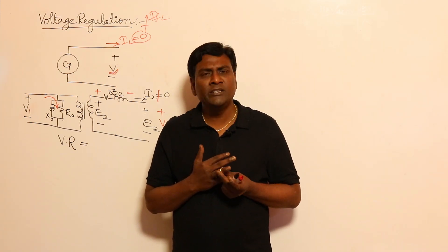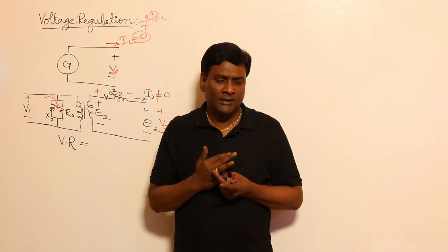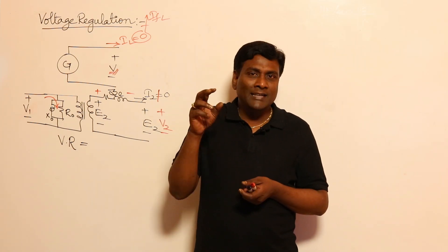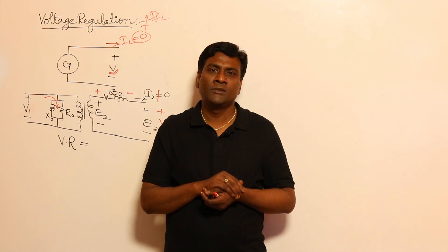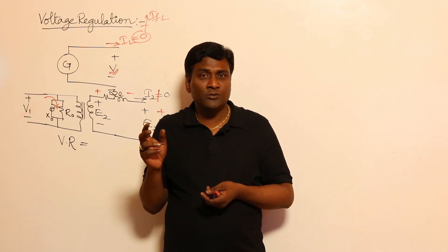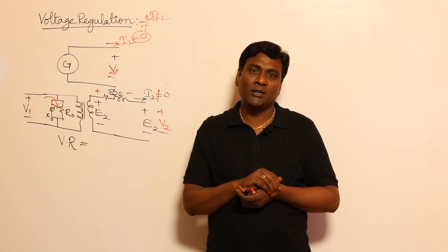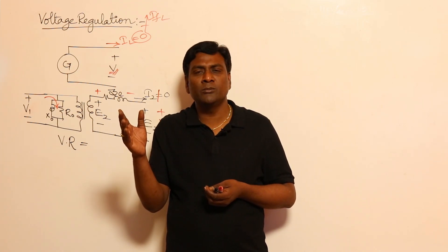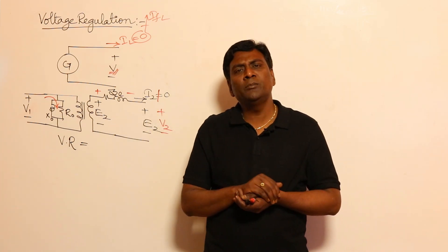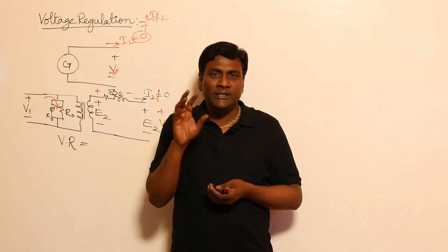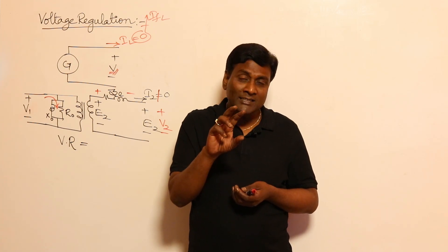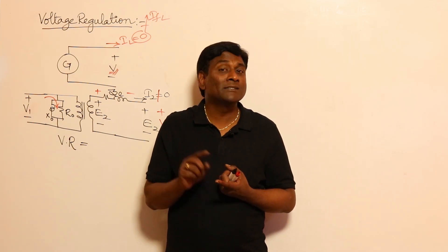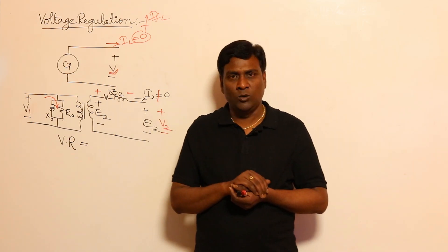There is an important distinction between distribution transformer and power transformer. In a distribution transformer, loads are directly connected — for example, the supply coming to your home comes from a distribution transformer. That output voltage is going to vary: if you switch on your AC, that load appears on the distribution transformer; if you switch it off, that load disappears. So the load component of current I2 and the power factor angle θ2 are both decided by the connected load.